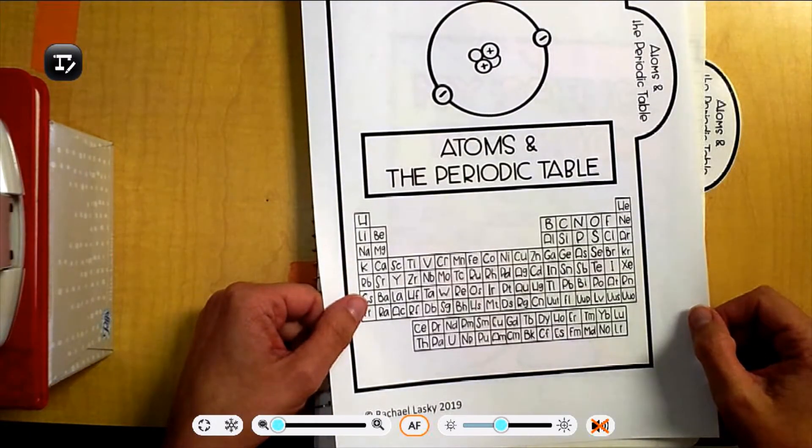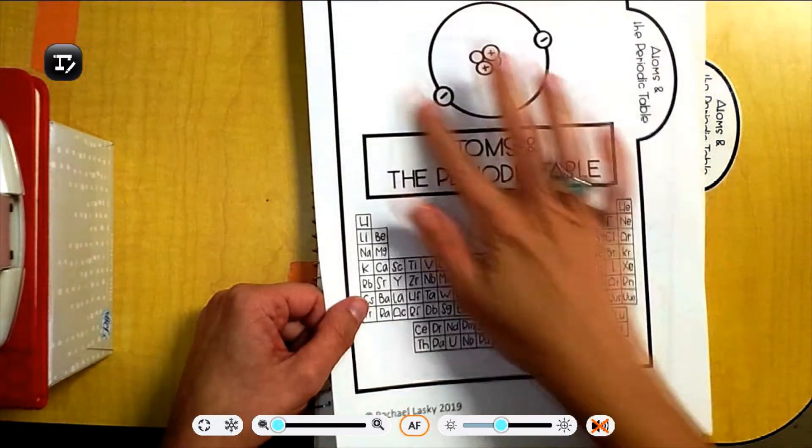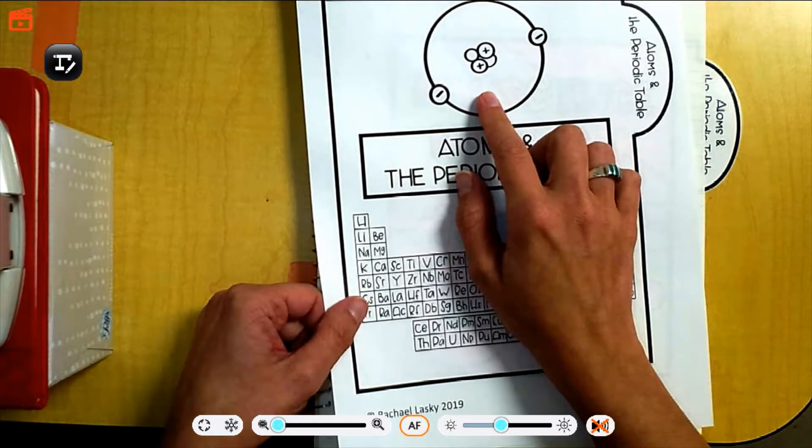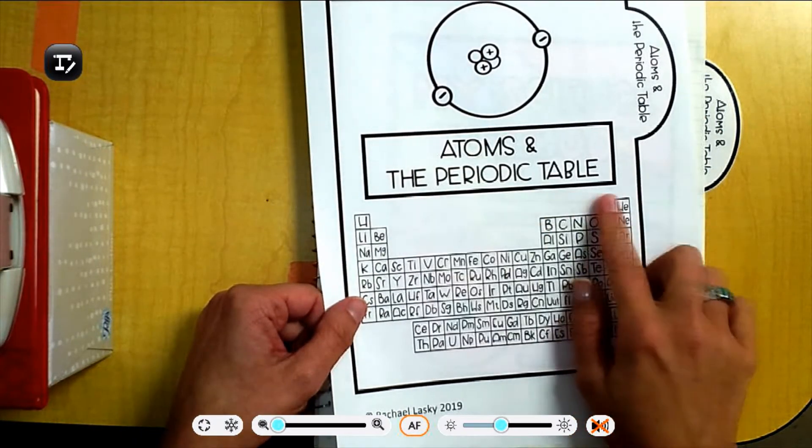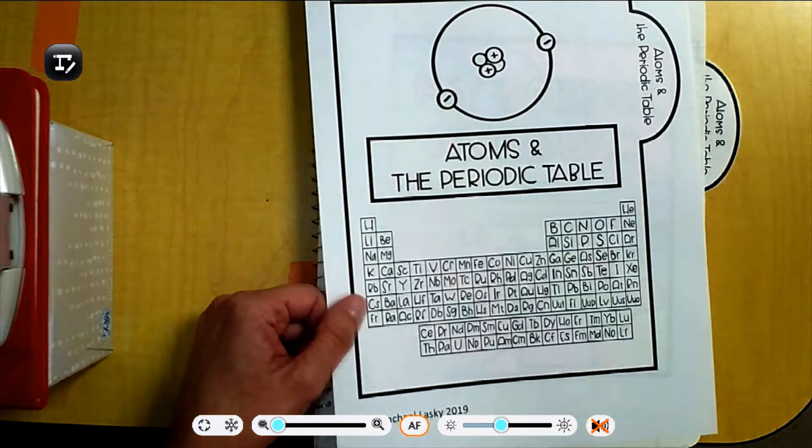It's atoms and the periodic table. That's atoms. So this is a model of an atom. And the periodic table. That's what this is. And that's what we're going to be talking about for this unit, unit number two.